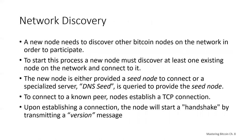When a new node boots up, it must discover other Bitcoin nodes in the network in order to participate. A new node must discover at least one existing node and connect to it. The Bitcoin network topology is not geographically defined, so any existing Bitcoin node can be selected at random. To connect to a known peer, nodes establish a TCP connection, usually on port 8333. Upon establishing a connection, the node will start a handshake by transmitting a version message which contains basic identifying information.